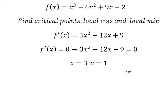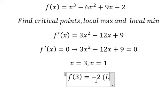We find the value by putting x = 3 into the function. We have f(3) = -2. This is the local minimum.